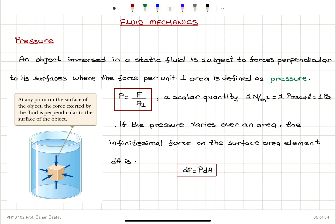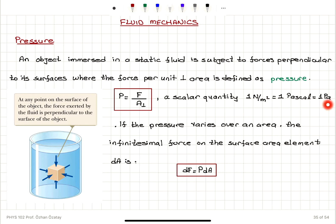In this first video on fluid mechanics, we will be talking about the concept of pressure. Pressure is defined as the force per perpendicular area. It's a scalar quantity — the magnitude of the force divided by the area that is perpendicular to it. The SI unit is newtons per meter squared, which is pascals. So 1 pascal, 1 Pa, is 1 newton per meter squared.